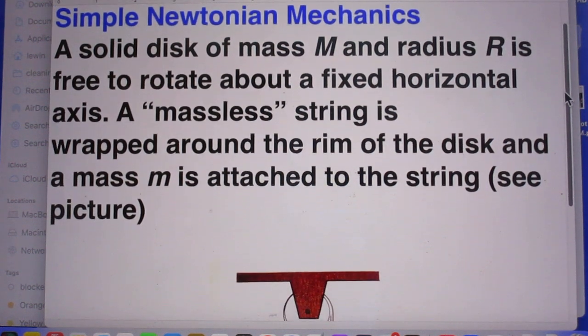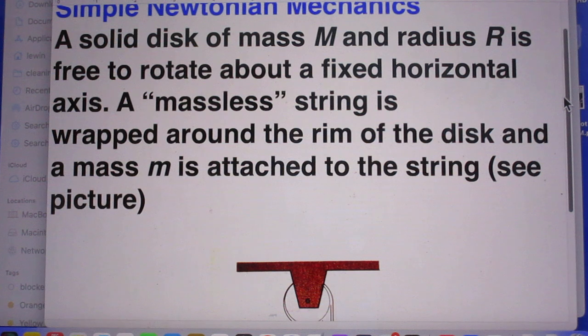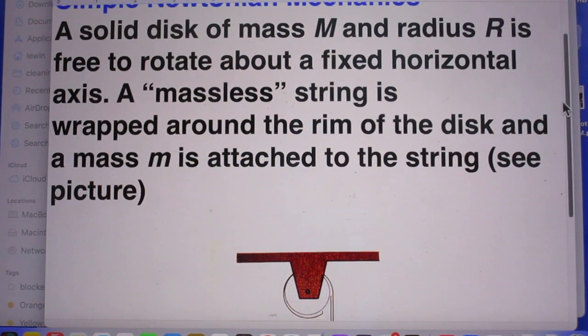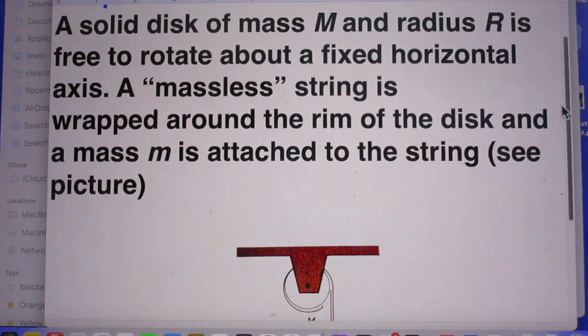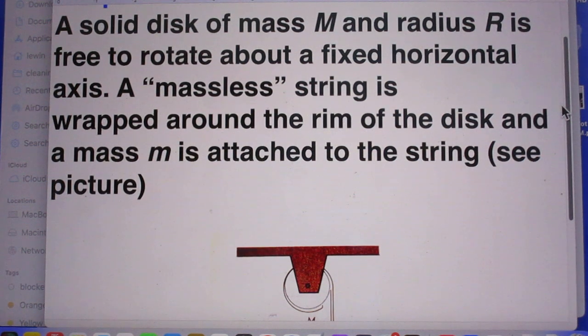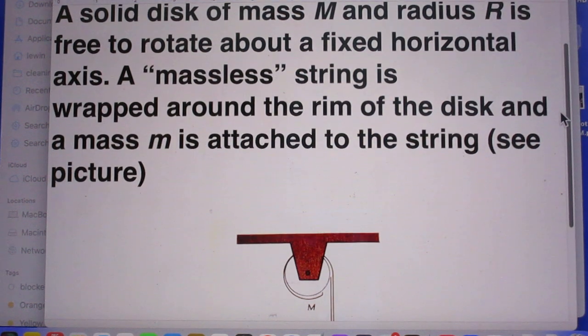A solid disk of mass capital M and radius capital R is free to rotate about a fixed horizontal axis.